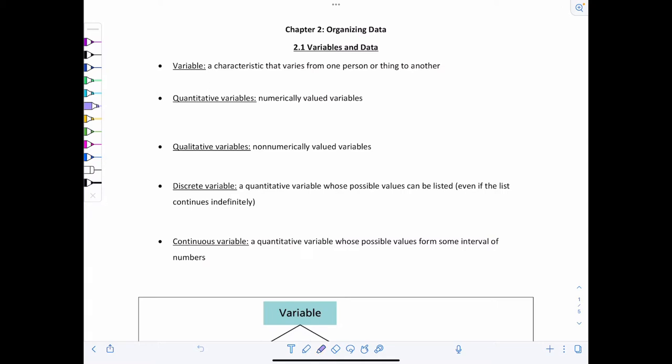We have quantitative variables and these are numerically valued variables. So the first few examples that I gave, like your height, that's a numerically valued variable. So that's a quantitative variable. Your age or the number of siblings you have.